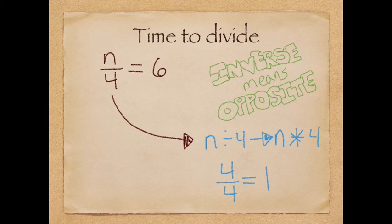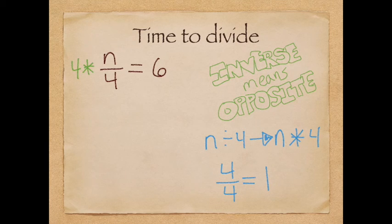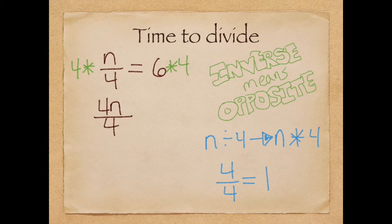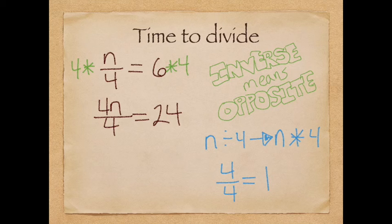So in this case, I'm actually going to multiply this side by four, because that means it becomes four over four. Remember as well, that whatever I do to one side, I need to do to the other side as well. So this becomes four n over four. Do you see that four fourths right there? Four fourths. What is four fourths?